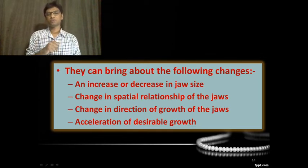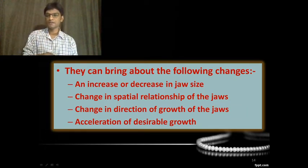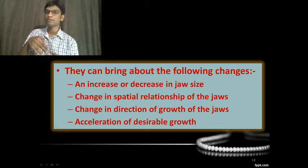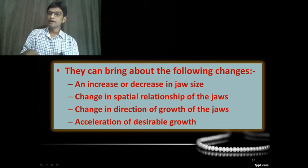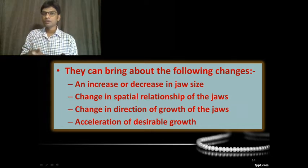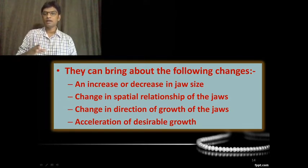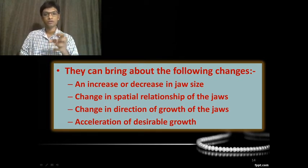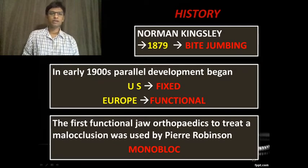Myofunctional appliances can bring about several changes: an increase or decrease in jaw size, changes in the spatial relationships of the jaws — for example, moving a Class 2 to a Class 1 relationship — changes in the direction of the growth pattern such as shifting from horizontal to vertical growth, and acceleration of desirable growth. For instance, you can accelerate maxillary or mandibular growth as needed.